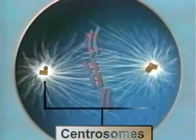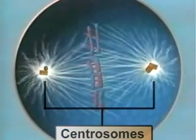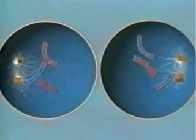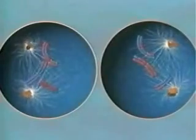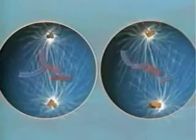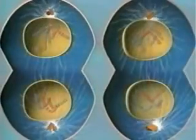In meiosis, the cytoskeleton coordinates two cellular divisions: one in which homologous pairs are separated, and one in which chromatid pairs are separated. The second division, where the chromatid pairs separate, looks a lot like mitosis. The end result of meiosis is four haploid cells, as opposed to the two diploid cells that result from mitosis.